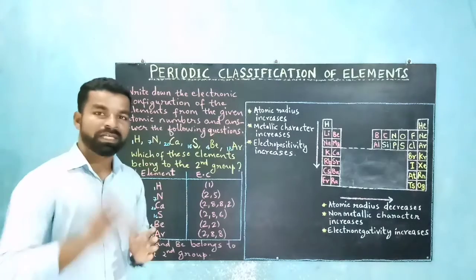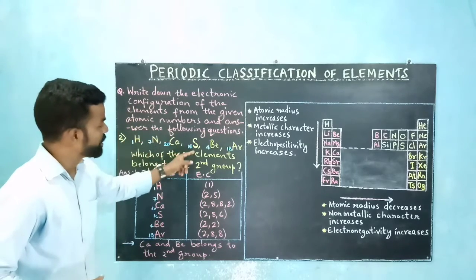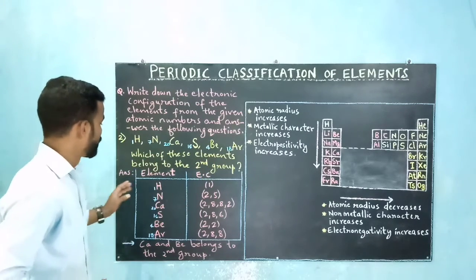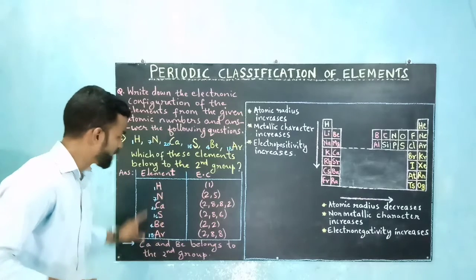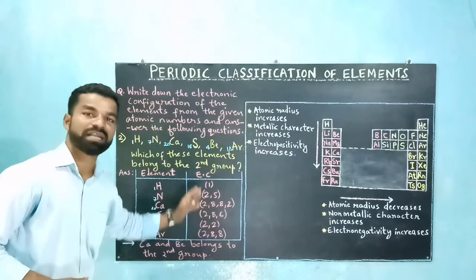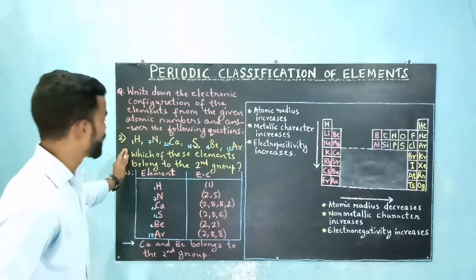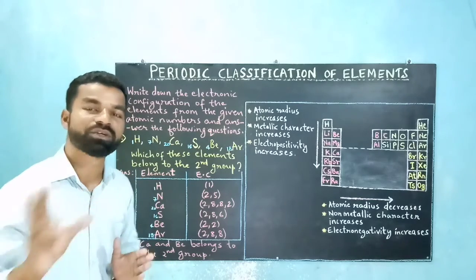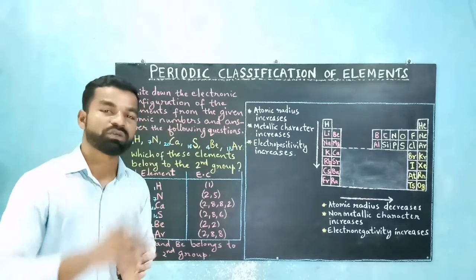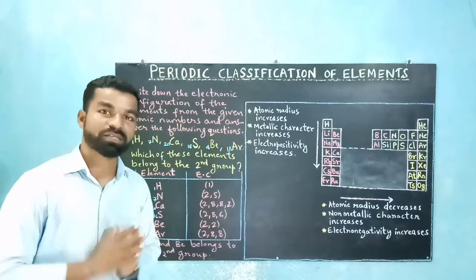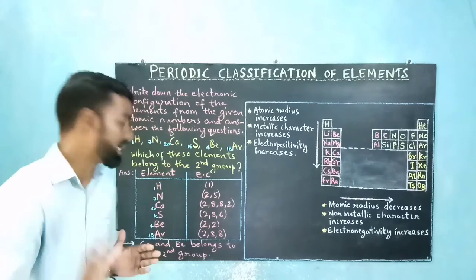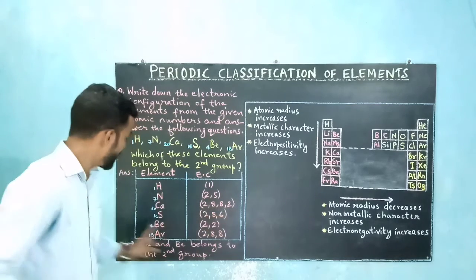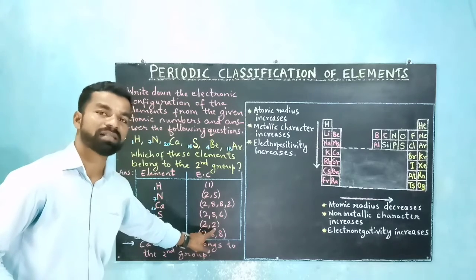The next set includes hydrogen, nitrogen, calcium, sulfur, beryllium, and argon, given along with their atomic numbers. The question is: which of these elements belong to the second group? Group 2 elements have two electrons in the outermost shell. Calcium has two electrons in the outermost shell and beryllium also has two electrons in the outermost shell, so calcium and beryllium belong to the second group.